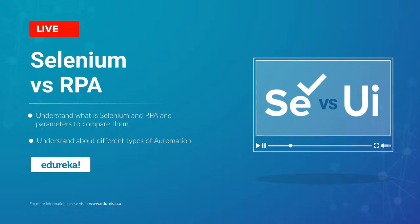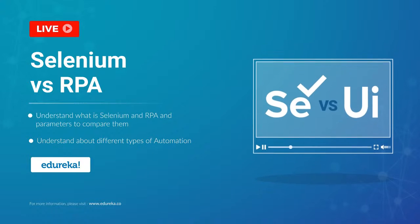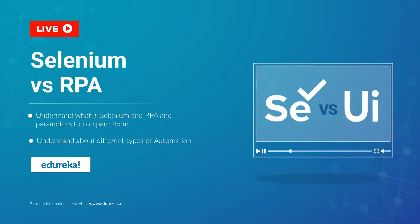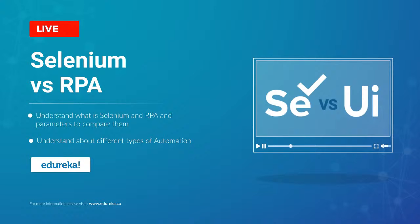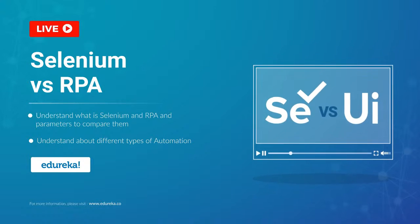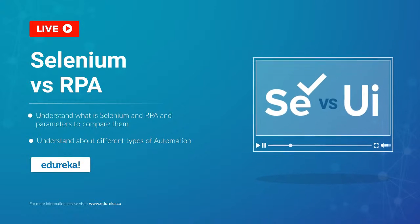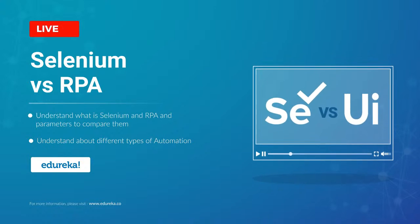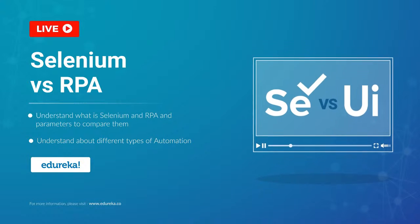Technology in recent days has reached its peaks and the growth of automation has added more wings to this transformation, from automating a simple unit test to automating the whole business process. Technology has augmented its way to the digital era. Hi all, this is Vaishnavi and I welcome you all to Edureka's YouTube channel. In this module, we are going to compare the two booming automation technologies that have been in the industry for more than a decade: Robotic Process Automation and Selenium.